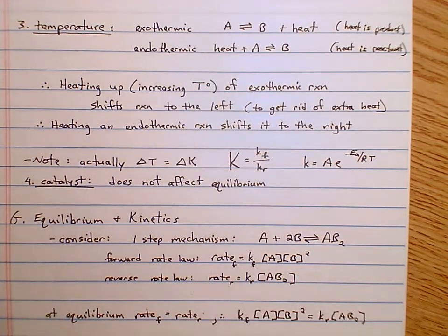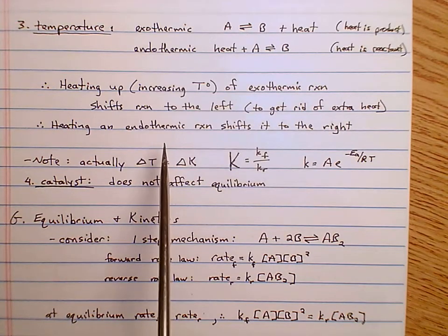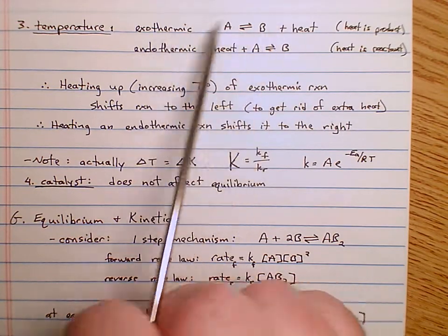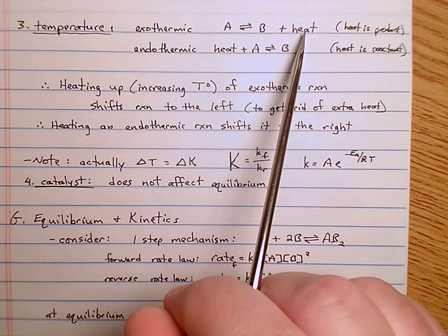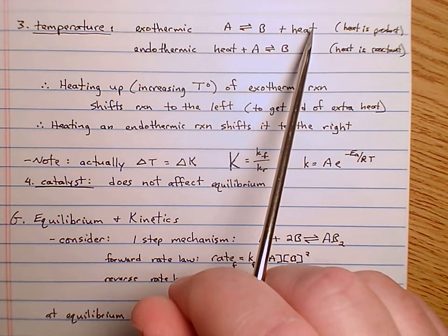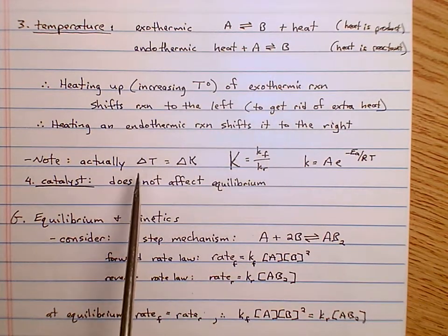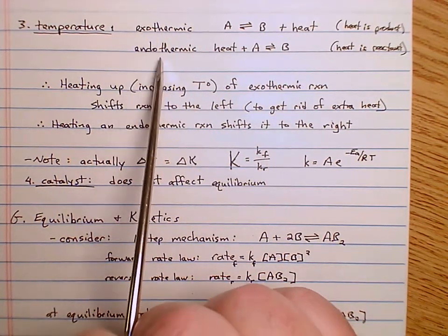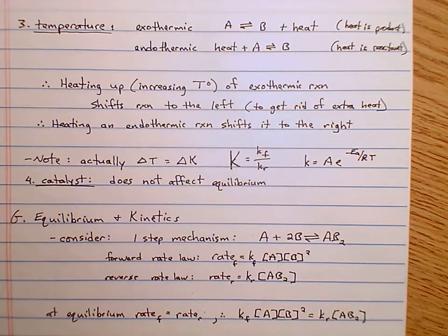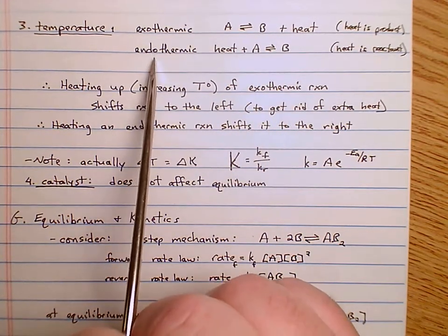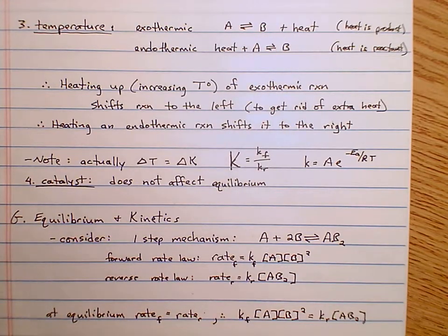If you had an exothermic reaction A ⇌ B and added heat, heat is a product, so it goes towards the left to make more A. If you have an endothermic reaction where heat is a reactant and you add heat, that pushes it to make more products. So for endothermic reactions you want to heat them up; for exothermic reactions you don't want to heat them up — you want to cool them down.